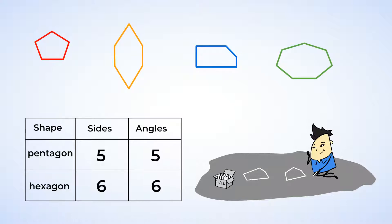Let's count the sides on the red shape. 1, 2, 3, 4, 5. There are also 5 angles. So this is a pentagon. Now let's try the orange shape. There are 6 sides. Now I'll count the angles. 6 angles as well. So this is a hexagon.